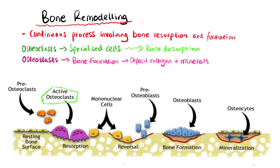For bone remodelling, this is a continuous process that involves both bone resorption (breakdown) and bone formation (creation). Osteoclasts are specialised cells responsible for bone resorption — they break down old, damaged bone tissue.